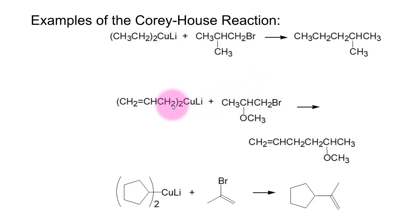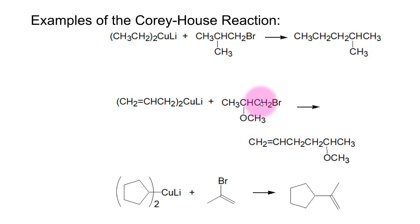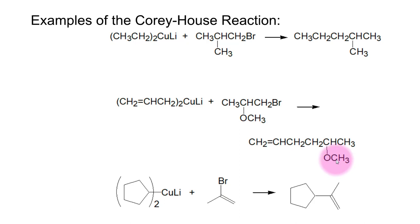In this case, I've taken di-allyl copper lithium — remember, this is the allyl group — and combined it with an alkyl halide that also has a methoxy group on the second carbon, so it's both an alkyl halide and an ether. Ethers are okay, alkenes are okay, so we can link the allyl group with the three-carbon chain bearing the methoxy group to make a new compound. This gives us 5-methoxy-1-hexene, with two new functional groups in the same molecule — very useful.